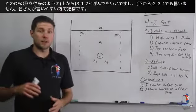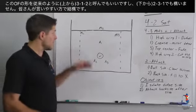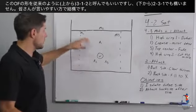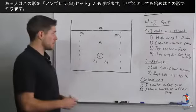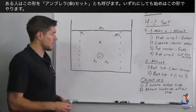To start the offense we're going to start in what's traditionally called a 3-1-2 or a 2-3-1 if you count from behind. Some other people call this the umbrella set but this is our basic set as we are going to start the offense.